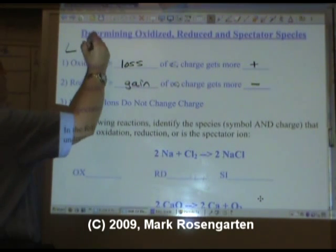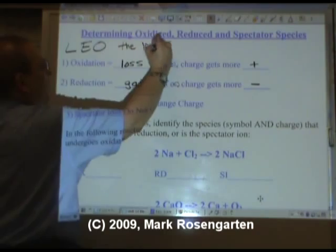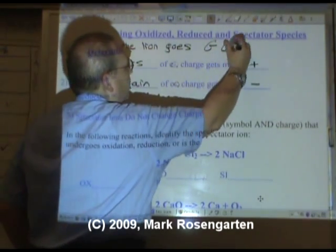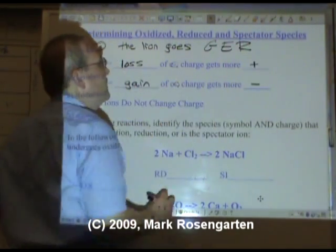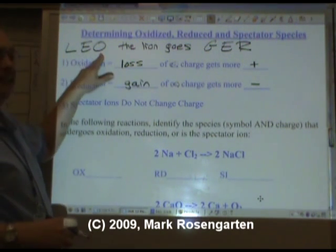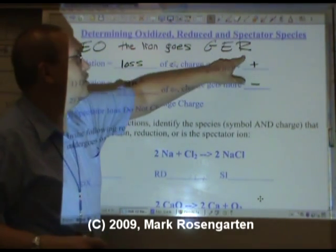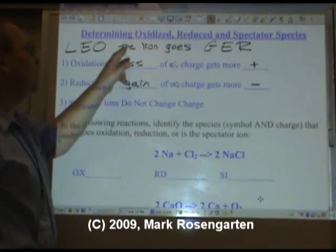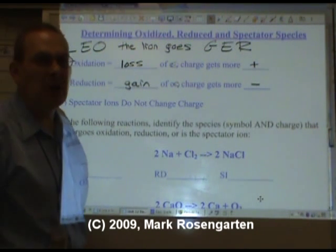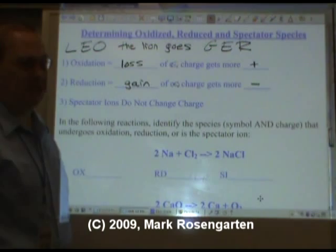There are a couple of ways of remembering this. A loss of electrons is oxidation. A gain of electrons is reduction. Loss of electrons is oxidation, gain of electrons is reduction. Leo the lion goes grrr. I don't know if I'd be too terrified of that particular lion.